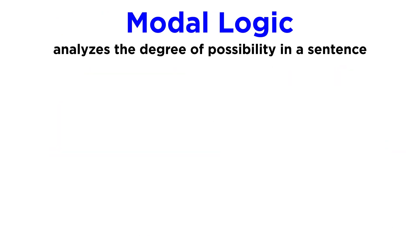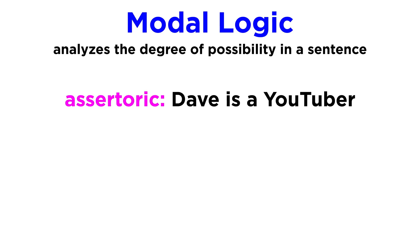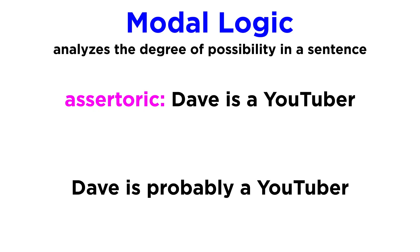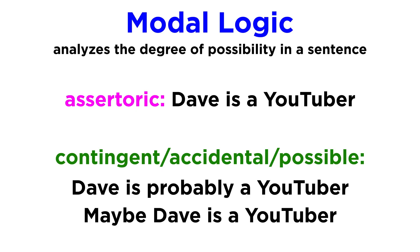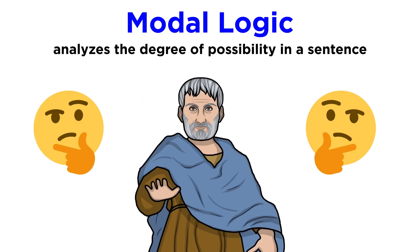Nevertheless, we will see later in the series that inductive reasoning still plays a big role when we think about the scientific method. Aristotle was also the first to veer into what would be known today as modal logic — modal because it analyzed the degree of possibility of a sentence instead of it being simply assertoric, or affirming nothing but its truth or falsity. For example, 'Dave is a YouTuber' is simply asserting some information. However, if someone doesn't know me or what I do for a living, they could say 'Dave is probably a YouTuber' or 'maybe Dave is a YouTuber.' These would be contingent or accidental — possible and not necessary — and would have different relationships with their assertoric counterparts. But Aristotle's formulations were problematic and largely abandoned soon afterwards, so we'll not go further into his perspective.